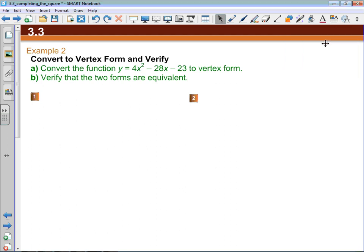So 3.3 example two just gets us to switch another function from standard form to vertex form. And then part B asks us to verify that the two forms are equivalent.